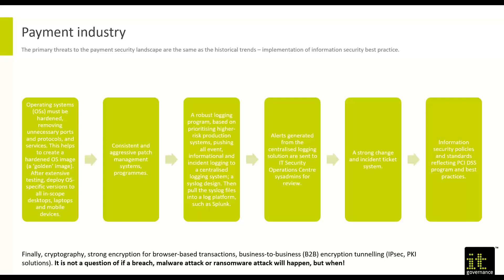Alerts generated from centralized logging solutions are sent to an IC security operation and system admins for review. Having a system that queues alerts to sysadmins, SOC admins, and NOC admins — via email, dashboard, or applications like Splunk — is essential. You know what's happening in real time, and your people are able to grab it, review it, triage it, investigate it, and either escalate it or dismiss it as a false positive. How alerts are handled, who they go to, and the triage and forensics steps — a classic SIEM system — is essential.